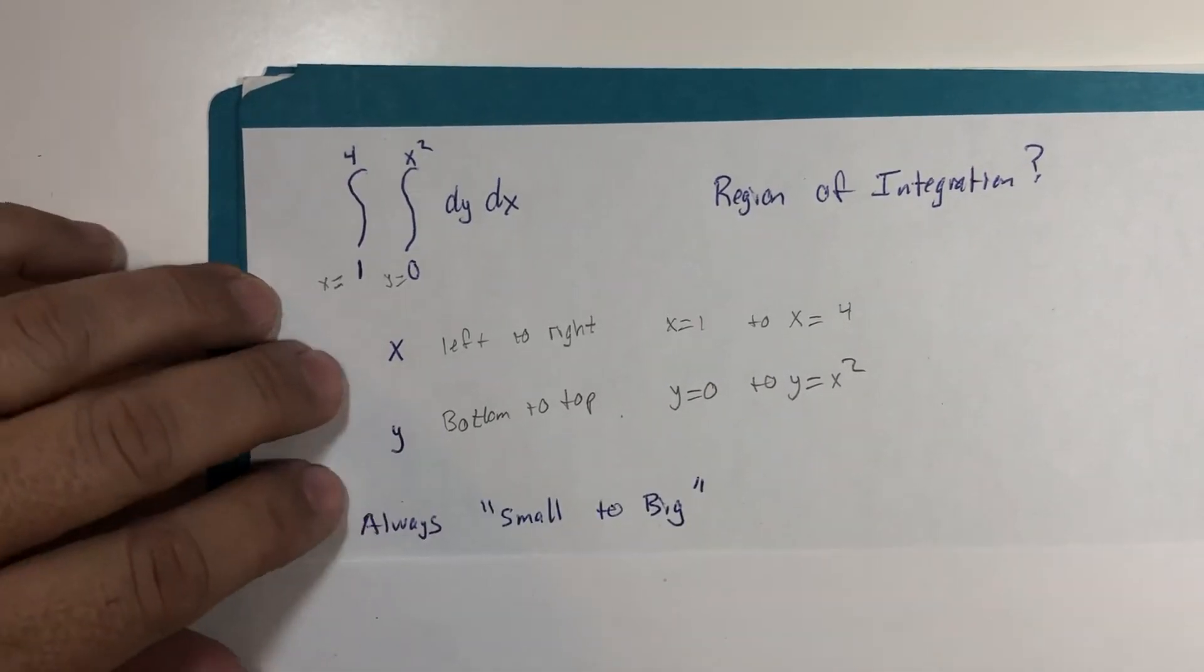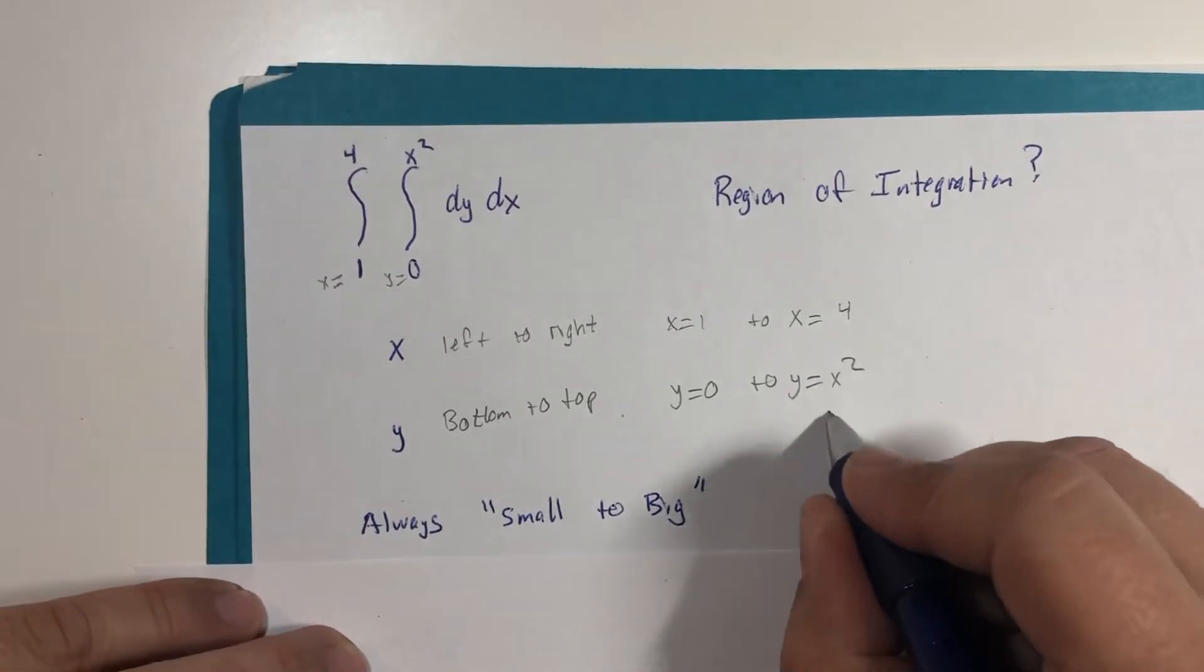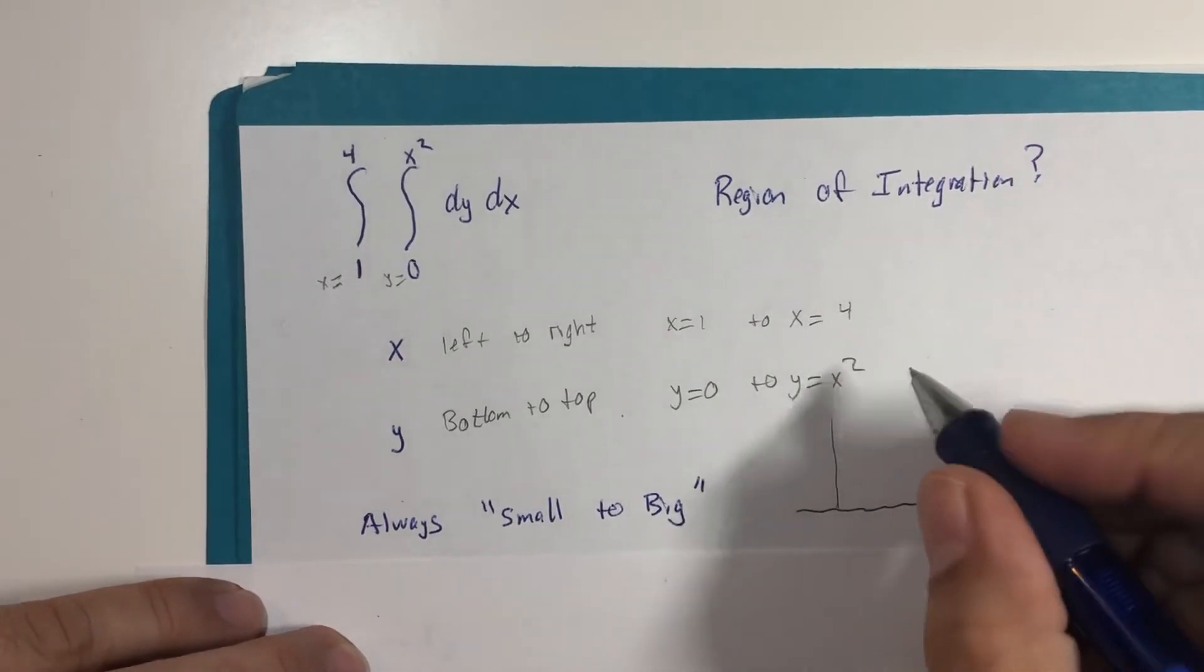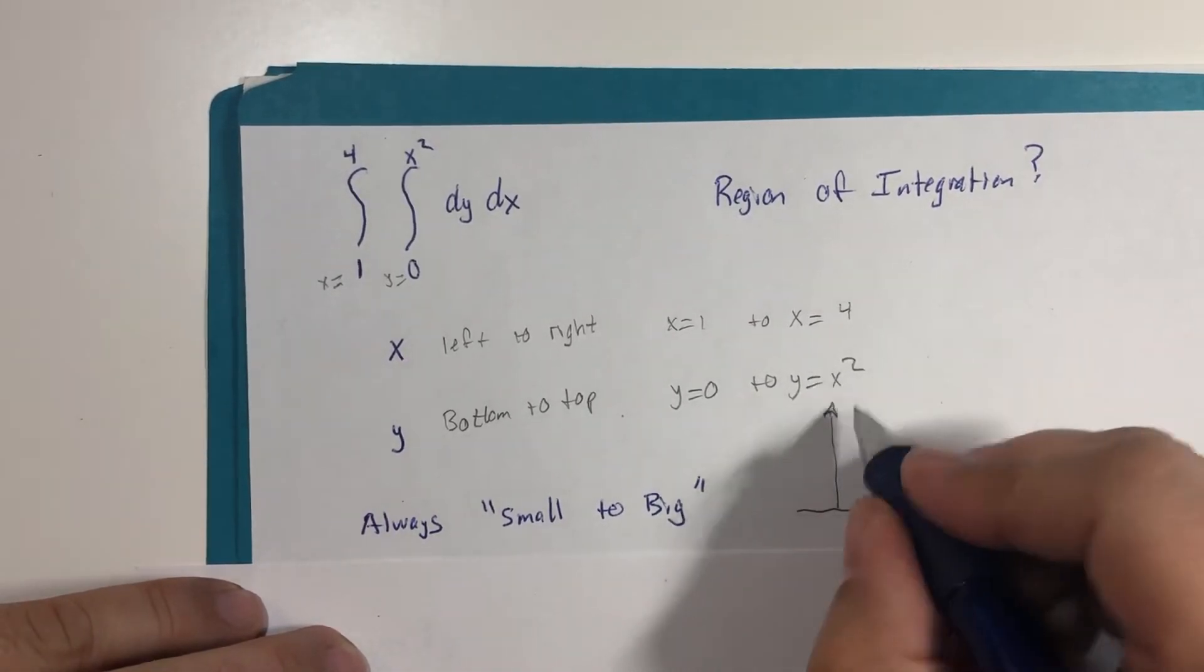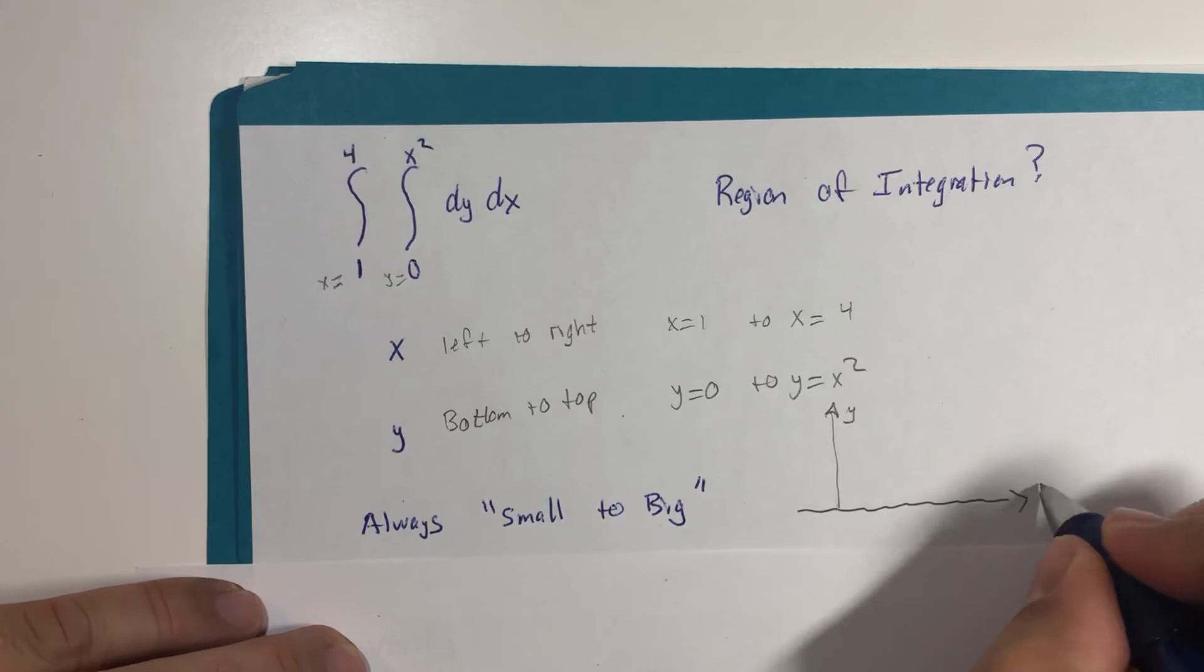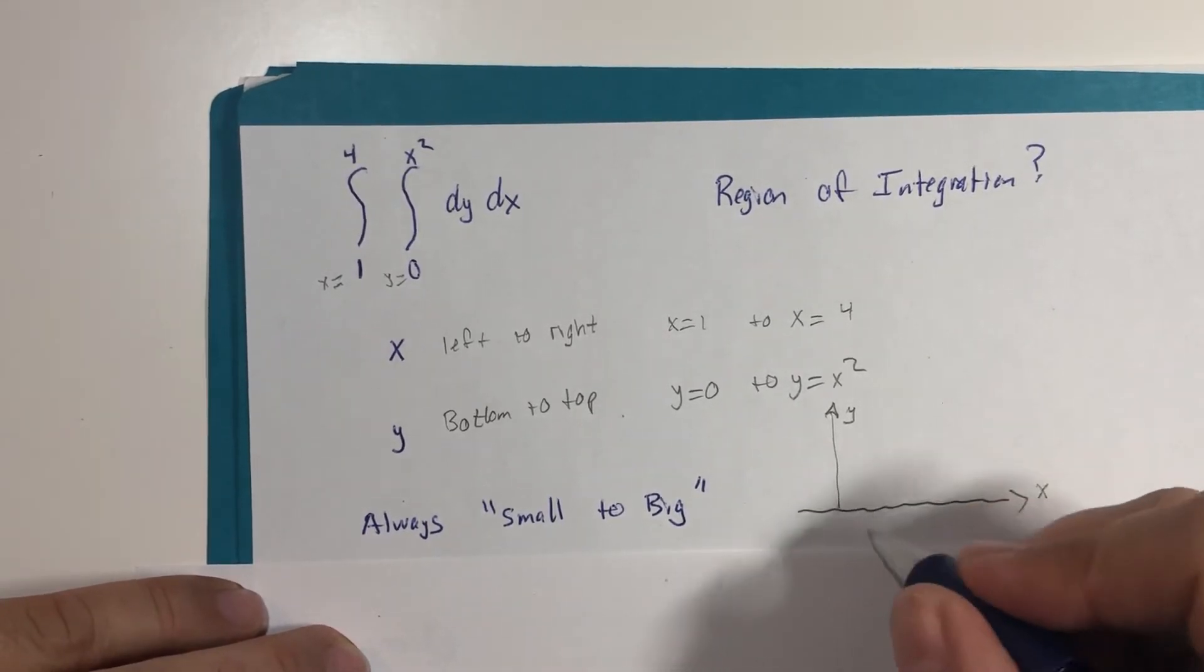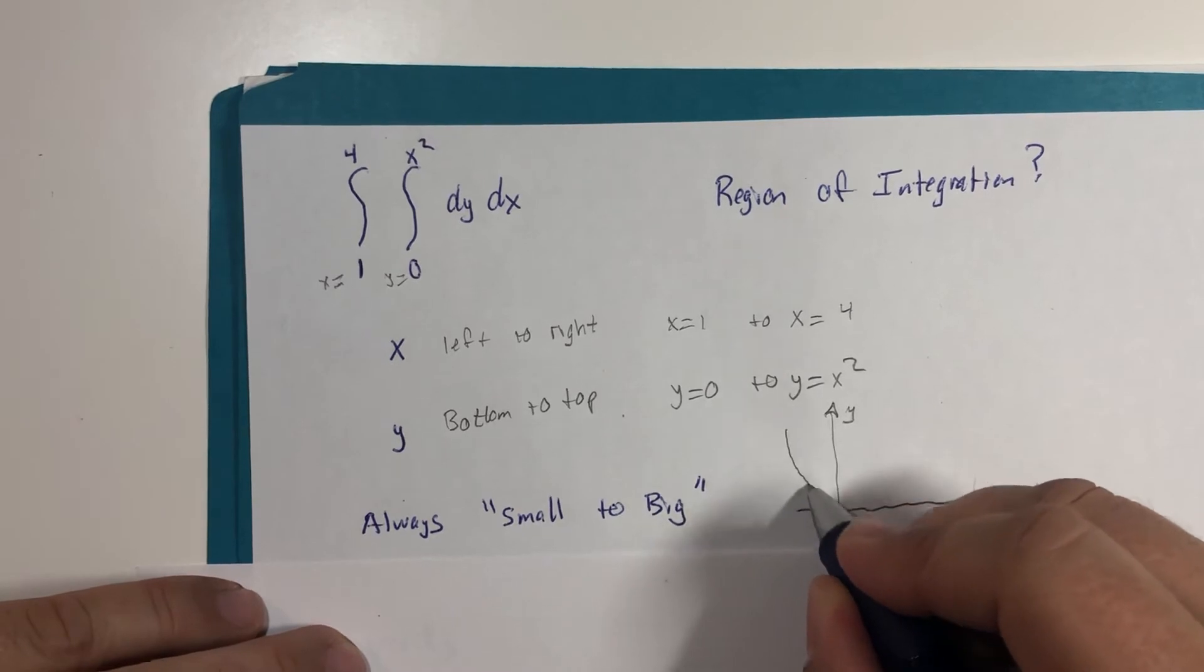All right, remember to always go small to big. So if I were to sketch this, y and x, the graph of y equals x squared is this parabola.